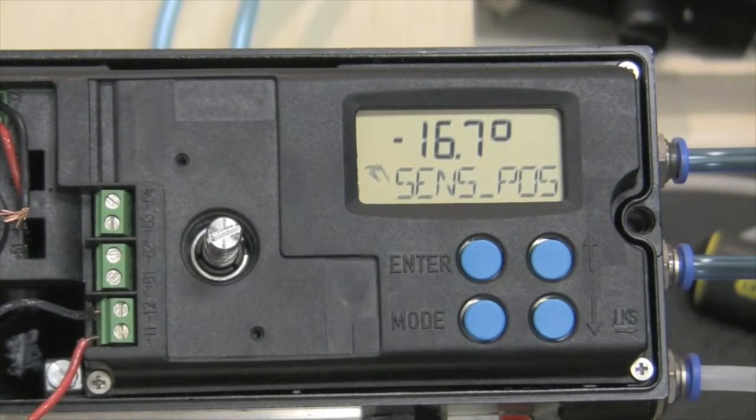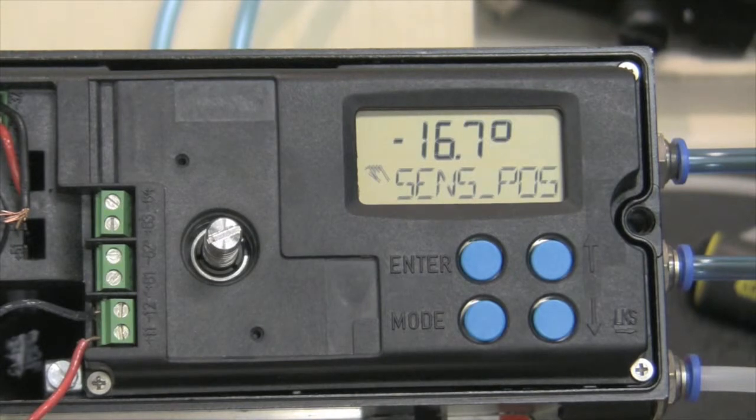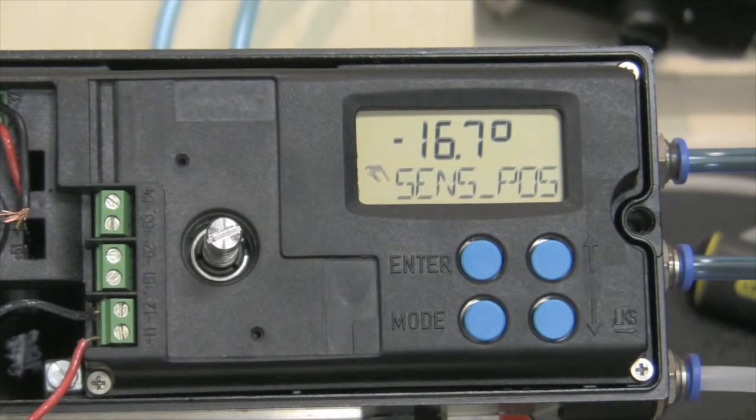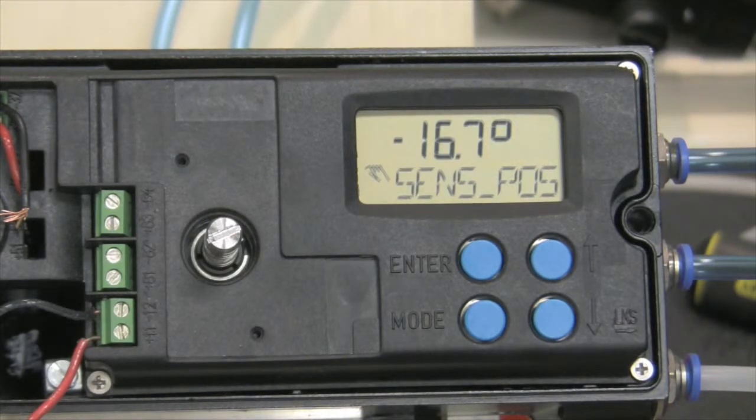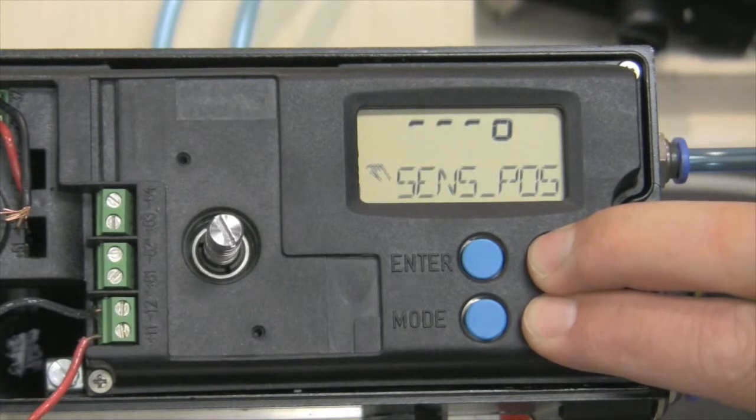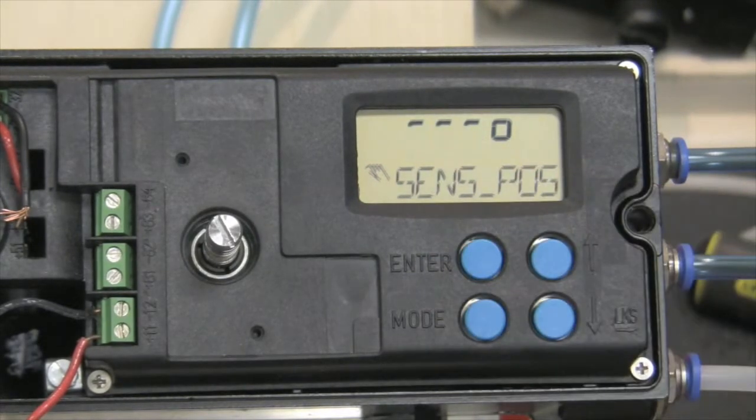We want to show you an example of an error message that you would get when you try to calibrate the positioner when it's out of quadrant. As you can see, here it's listing a number of negative 16.7. When we go to stroke it, it obviously reads a non-number, which means it's way out of quadrant.